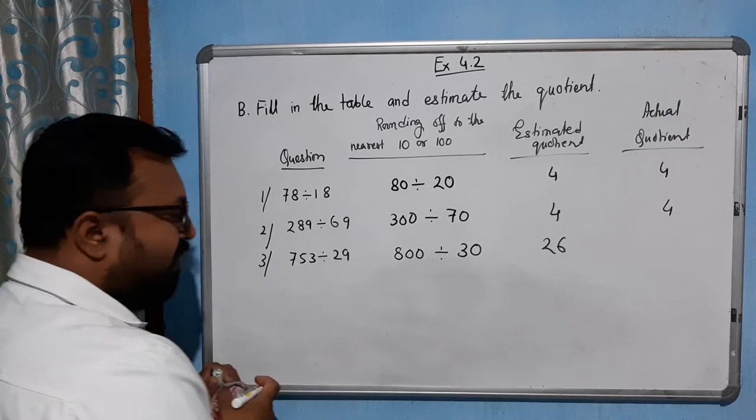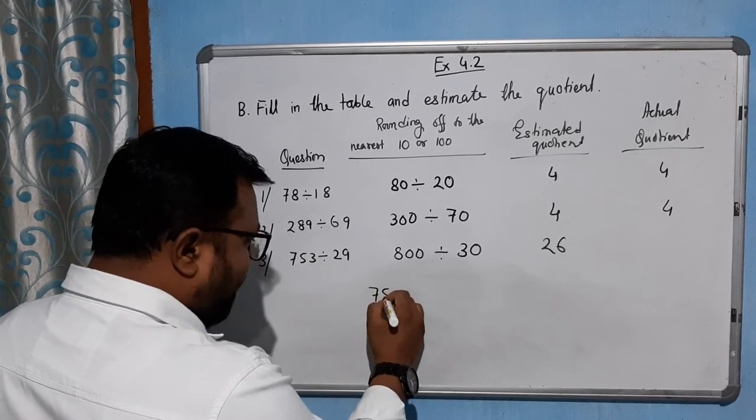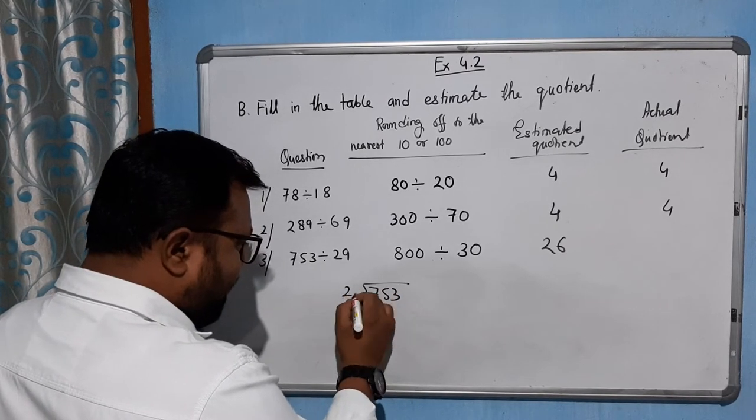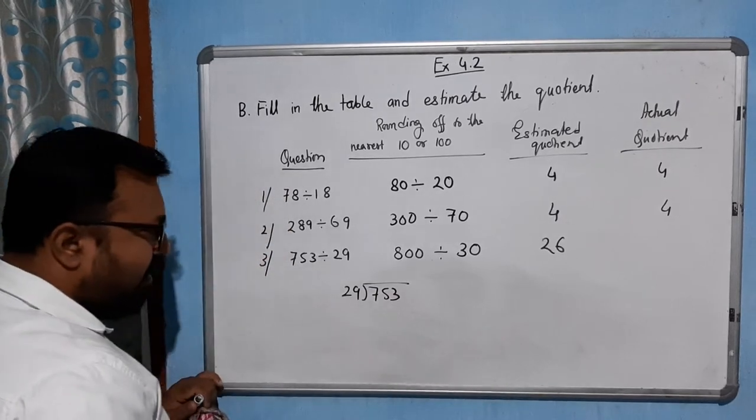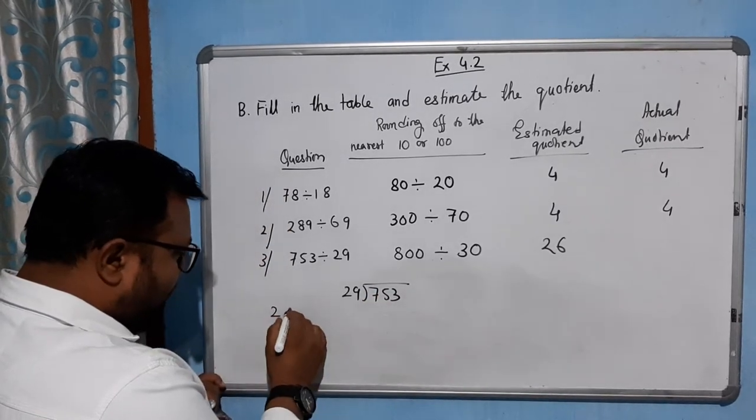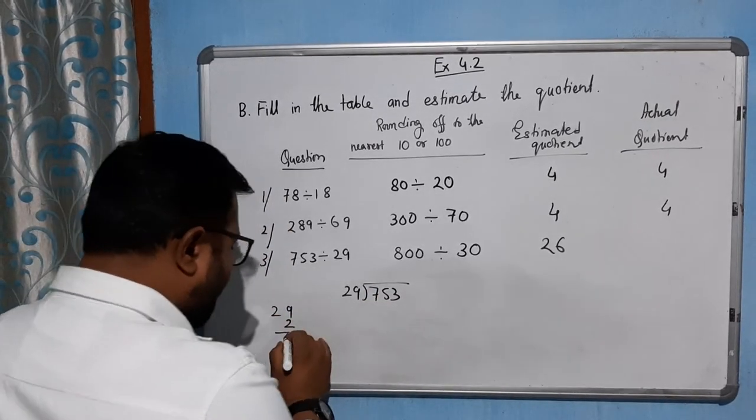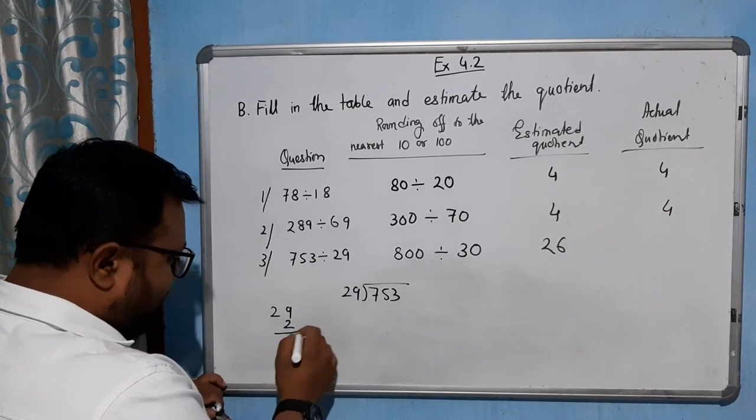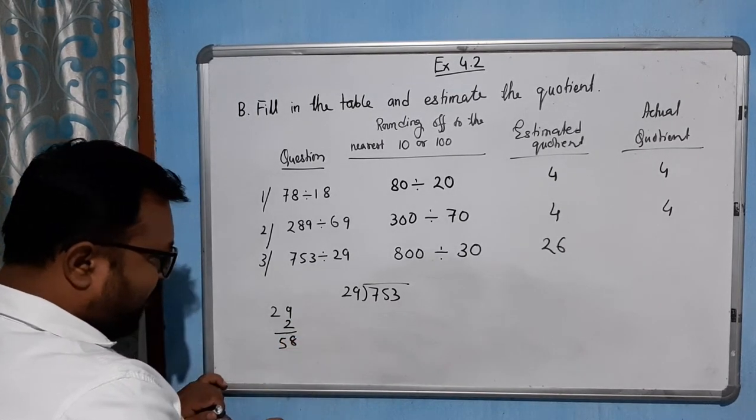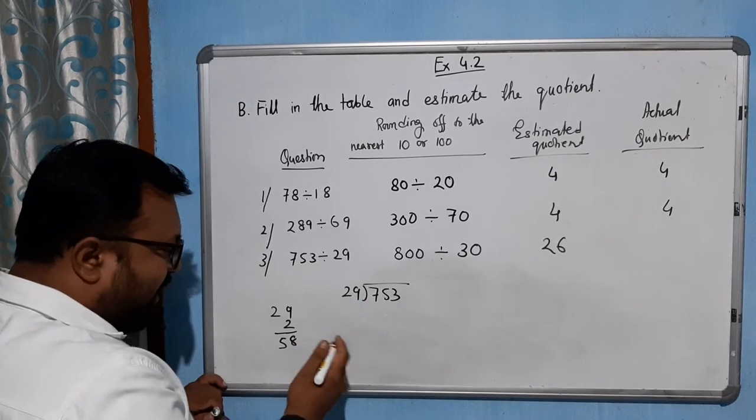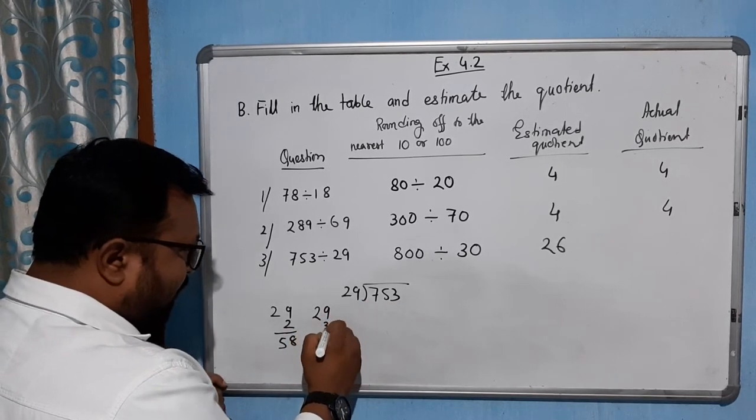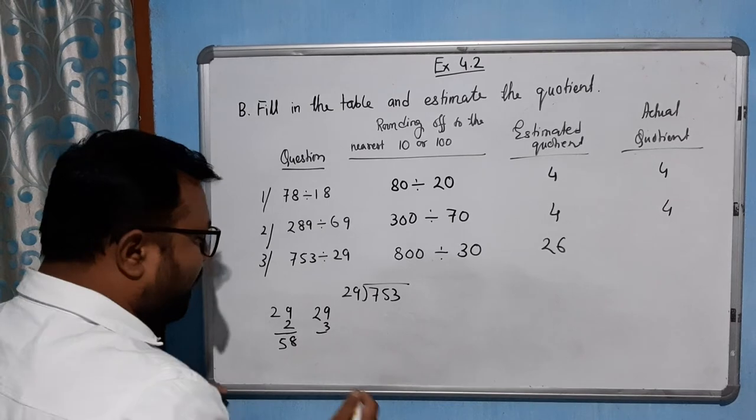Now what about the actual quotient? 753 divided by 29. Let's try 2: 29 times 2 gives 58. We get remainder 19, bring down 3, giving 193. Let's try by 3, how much will you get if you try by 3?